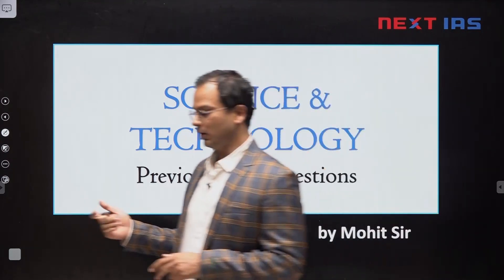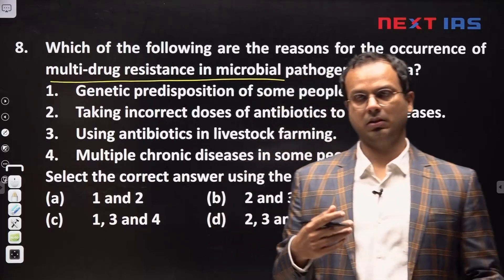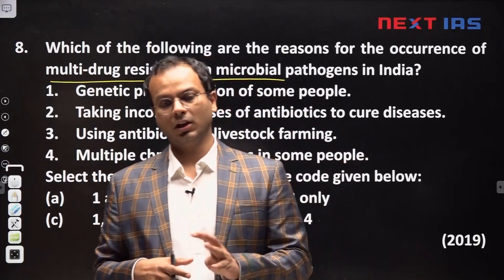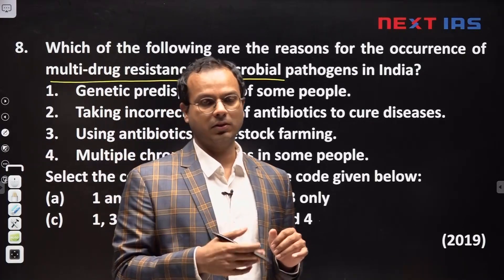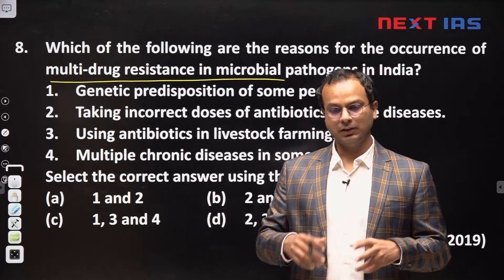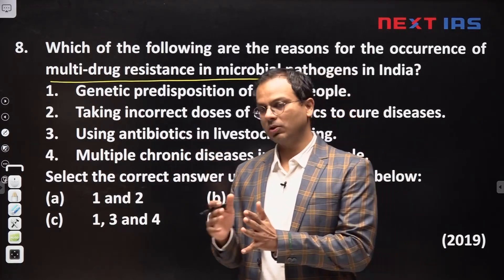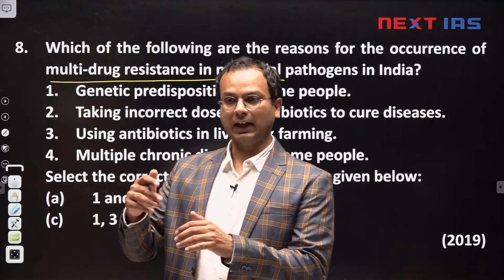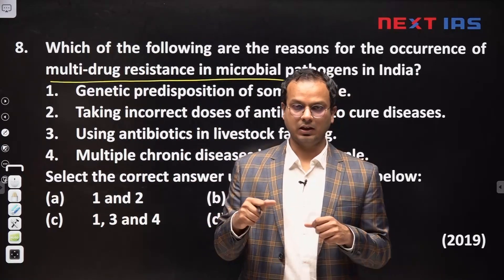Without wasting time, let us jump into the questions. The first question is about multi-drug resistant microbial pathogens. Sometimes when we misuse antibiotics — for example, a doctor prescribes antibiotics for 5 days but you feel better after 3 days and stop taking them — the easier-to-kill bacteria die in the first 3 days, but the remaining stronger bacteria survive and give birth to the next generation, all resistant to antibiotics.